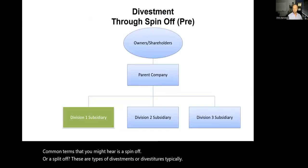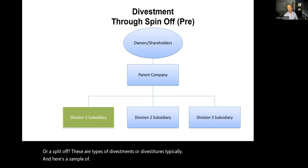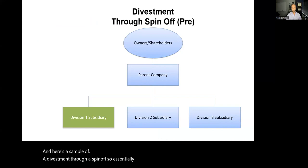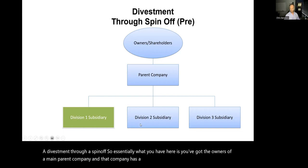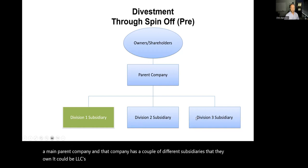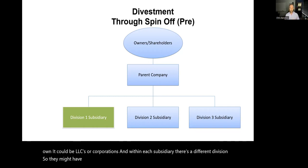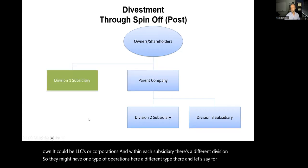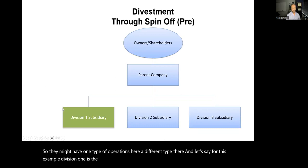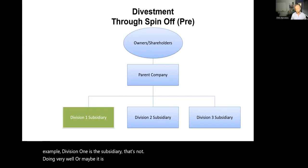Here's a sample of a divestment through a spinoff. Essentially, what you have here is the owners of a main parent company, and that company has a couple of different subsidiaries that they own — it could be LLCs or corporations. Within each subsidiary there's a different division, so they might have one type of operations in one place, a different type in another. Let's say division one is the subsidiary that's not doing very well, or maybe it is doing really well and somebody wants to potentially acquire it.